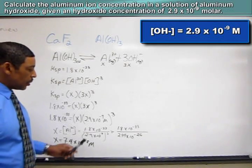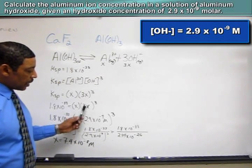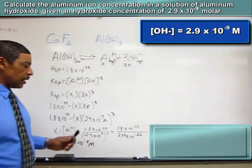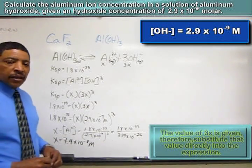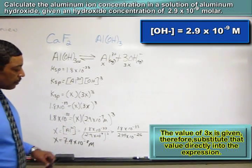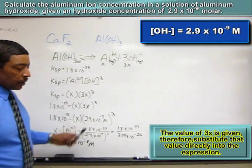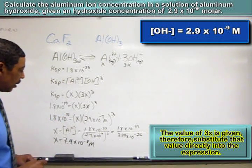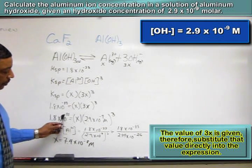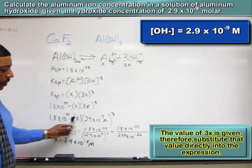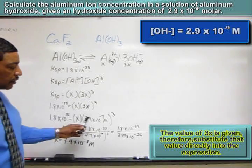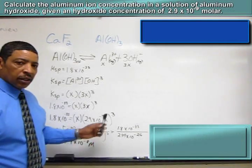Now, in the information, we know that the value of 3x is actually 2.9 times 10 to the minus 9 molar. So in the next step, in place of the 3x, we simply insert that given information, which will generate the following: 1.8 times 10 to the negative 33 equals x times 2.9 times 10 to the minus 9 molar cubed.